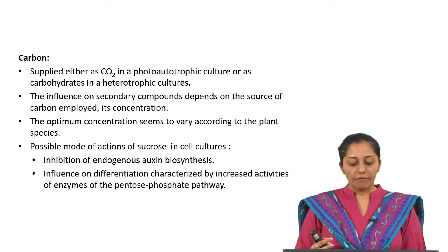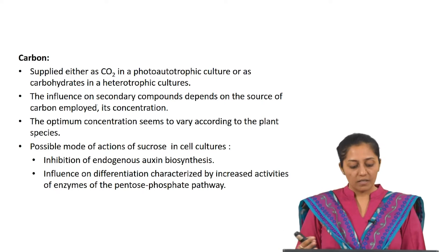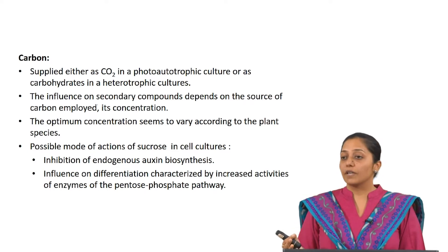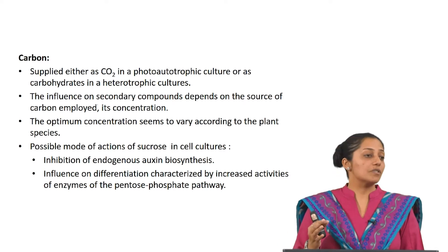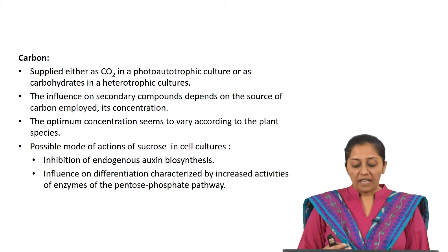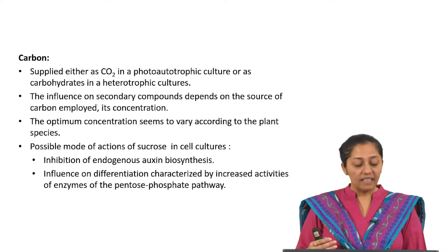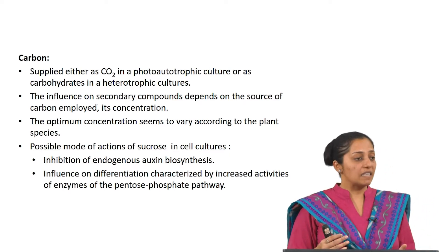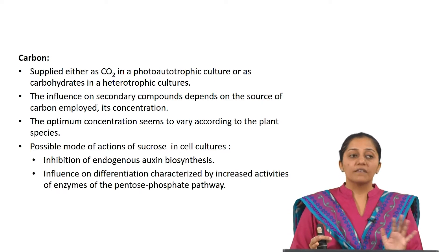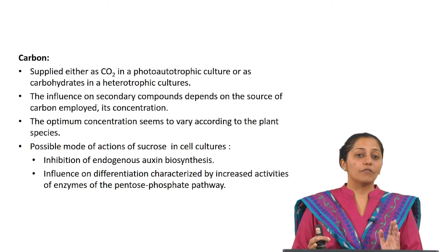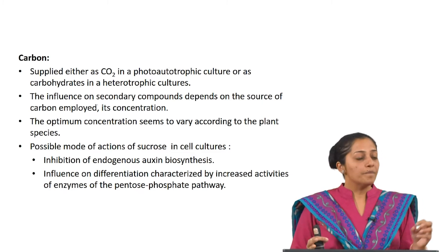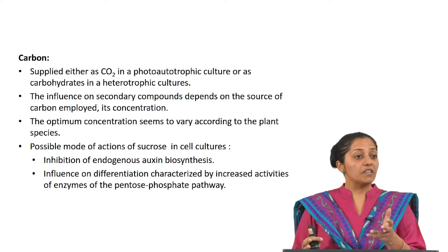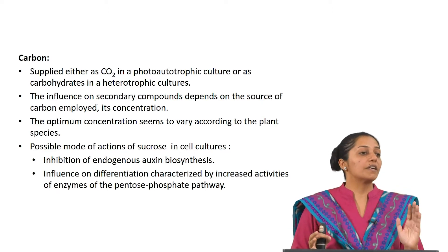The possible modes of action of sucrose in cell cultures include inhibition of endogenous auxin biosynthesis — manipulating sucrose concentrations may indirectly impact endogenous auxin levels. There is also influence on differentiation characterized by increased activity of enzymes in the pentose phosphate pathway. One cannot generalize these effects; it depends on the species and the kind of secondary metabolite you are working with. Therefore, one has to take cues from literature and optimize according to the type of culture, plant species, and class of secondary metabolite.